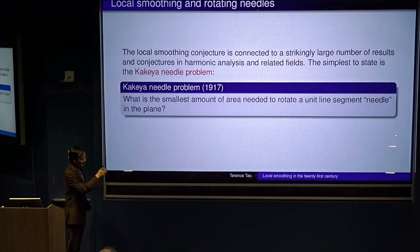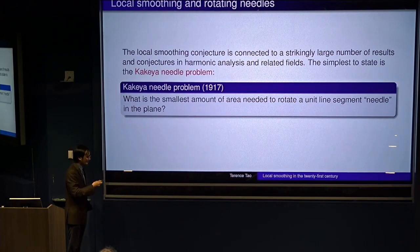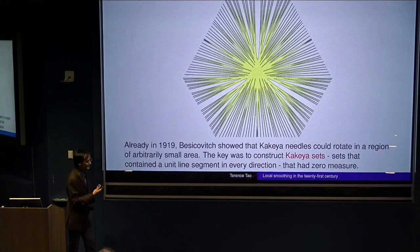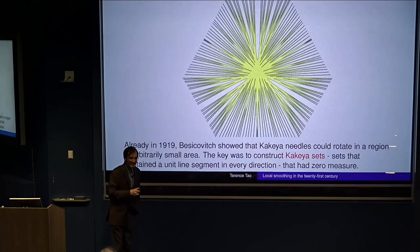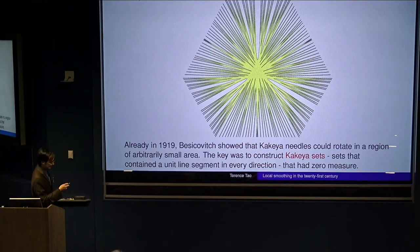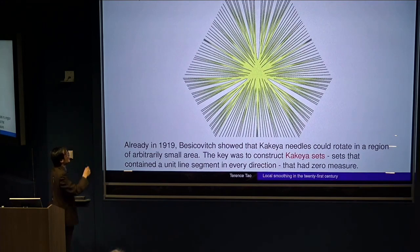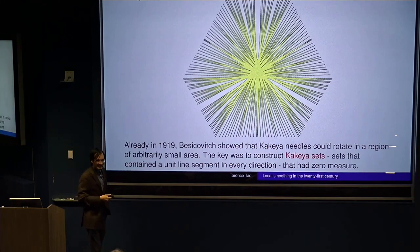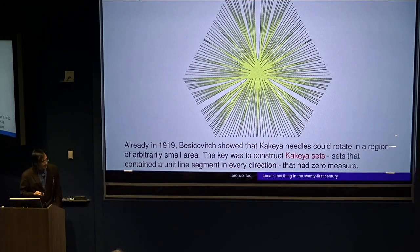But actually, it turns out that if you, instead of a three-point U-turn, you do a five-point or seven-point. If you do, like, lots of little turns, it turns out that, actually, you can turn a needle around using arbitrarily small area. There is a way, so there are these things called Kakeya sets. Kakeya set is a set that contains a unit line segment in every direction. And these are basically, roughly speaking, these are sets in which it's possible to do a very fancy parallel parking maneuver and turn a needle around. And you can use as little area as you wish. So, these were constructed by Besicovitch first, back in the early 20th century.